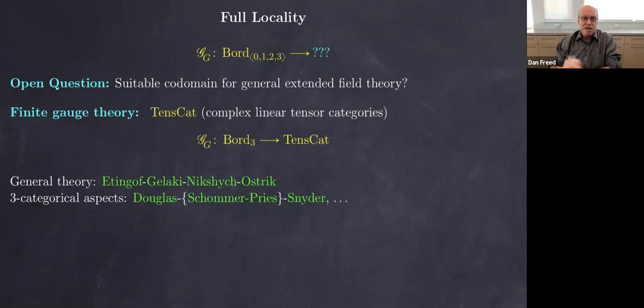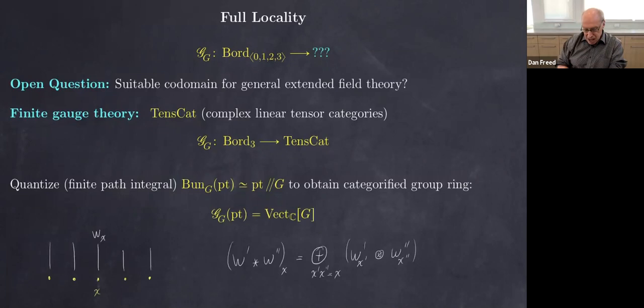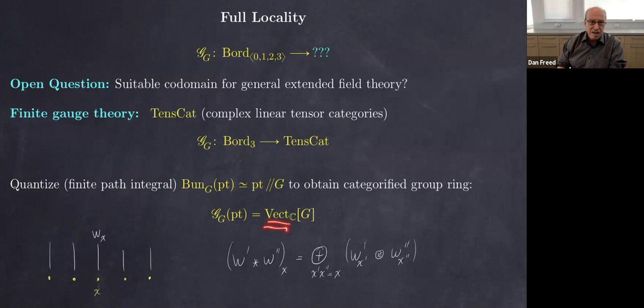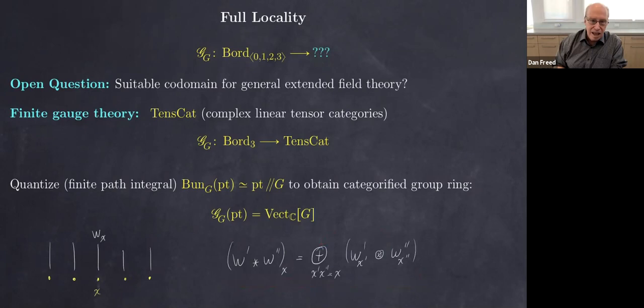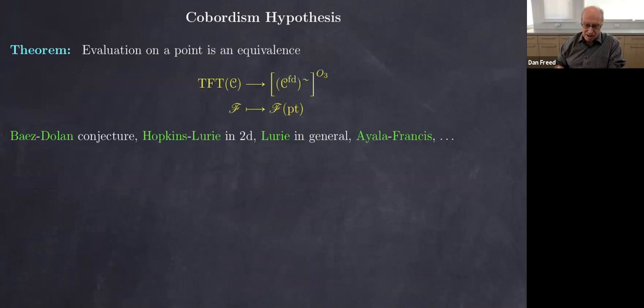Once we go down to zero manifolds in the game, a zero manifold maps to a tensor category. In this case the tensor category is a version of the group ring of the finite group where the ring is the ring of vector spaces — a categorified ring. If we have a vector bundle over the group, that's what it means to have a sum of group elements with coefficients that are vector spaces, and the product on those is convolution — but instead of multiplication and addition, we use tensor product and direct sum of vector spaces.